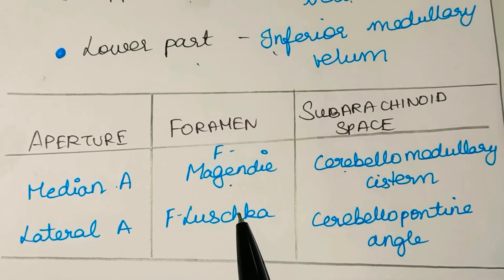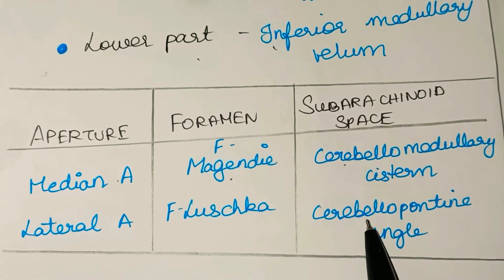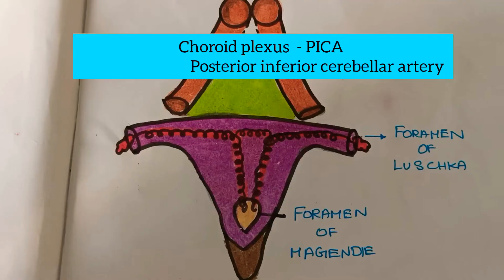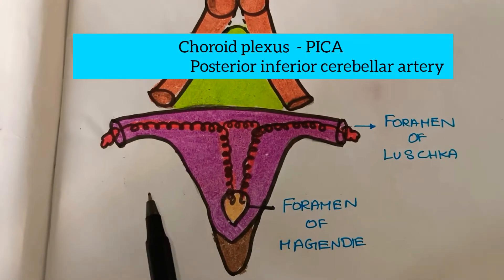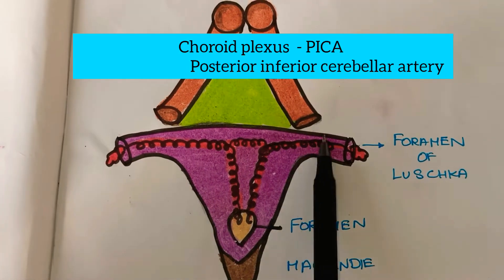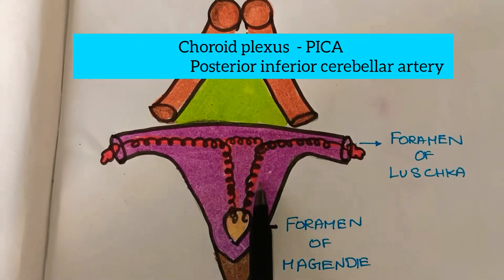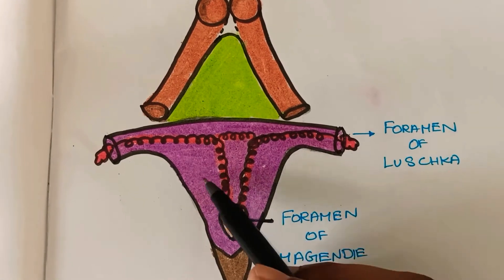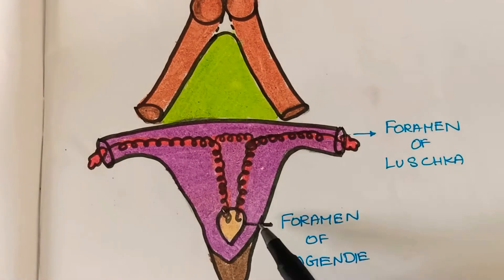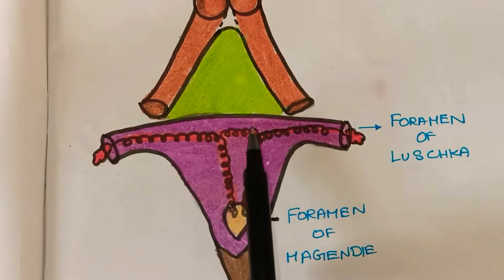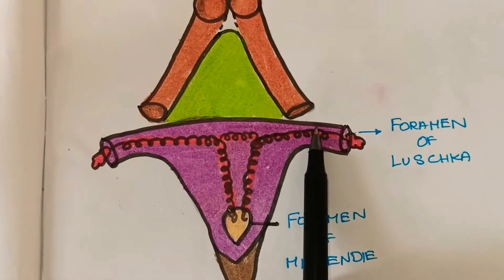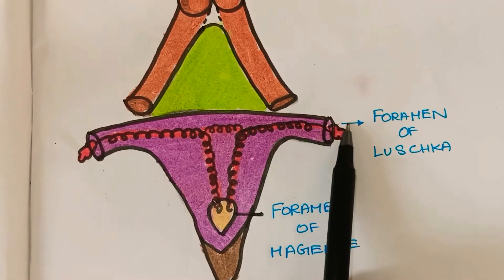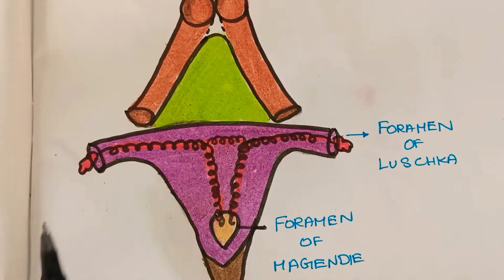Through these two apertures, communication occurs with the subarachnoid space. The foramen of Magendie connects to the subarachnoid space of the cerebellomedullary cistern, also called the cisterna magna. The foramen of Luschka connects to the subarachnoid space at the cerebellopontine angle. The choroid plexus is T-shaped: the vertical limb is double-layered and extends into the foramen of Magendie, while the horizontal limb extends into the foramen of Luschka on both sides.